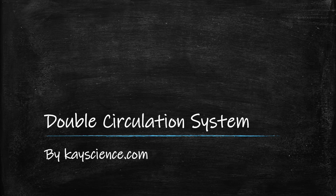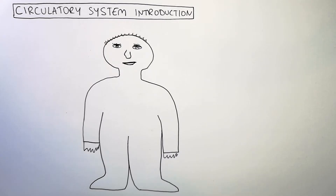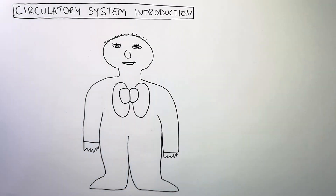The double circulation system by kscience.com. Humans have a heart, we also have lungs — one heart and two lungs.